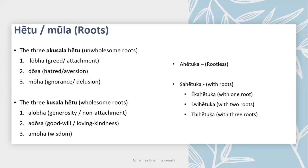The sahetuka consciousness, those with roots, are further subdivided depending on the number of roots present. If it has one root it is called ekahetuka, 'ekah' referring to one. If the consciousness has two roots it is called dvihetuka. If it has three roots, the prefix 'ti' referring to three is used.